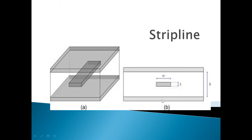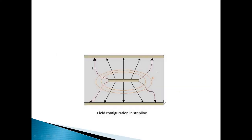The thickness of the metallic central conductor and the metallic ground planes are the same — both the top ground plane and the bottom ground plane have the same thickness as the strip. The width of the ground plane is 5 times greater than the spacing between the two ground planes.